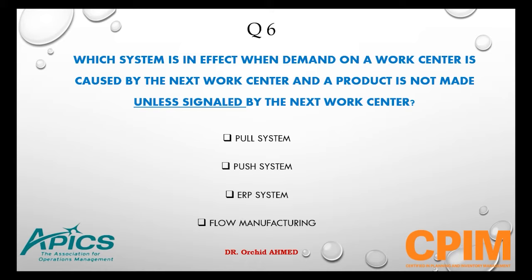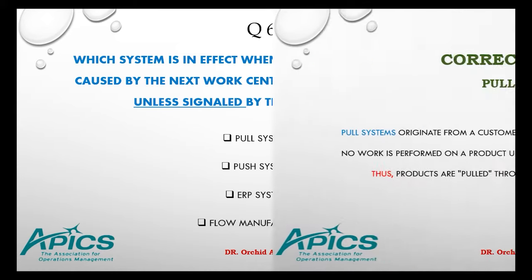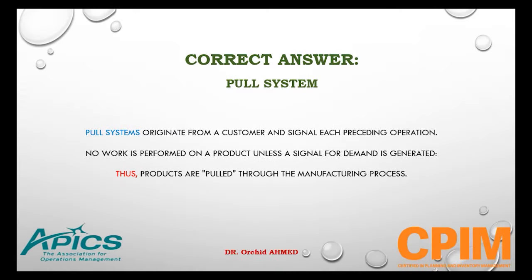The right answer is pull system. The pull system comes from a customer and signals each preceding operation. No work is performed on a product unless a signal from demand is generated. Thus, products are pulled throughout the manufacturing process.